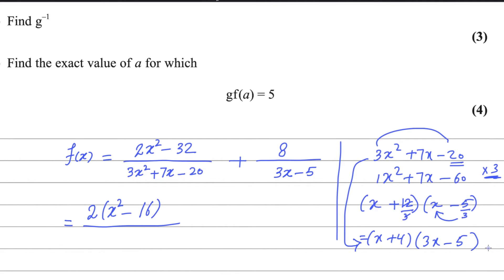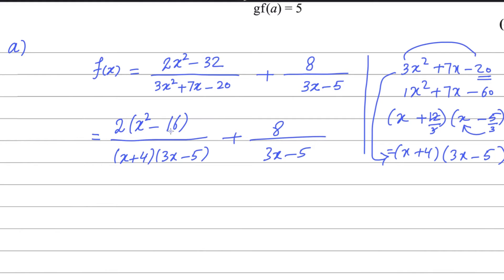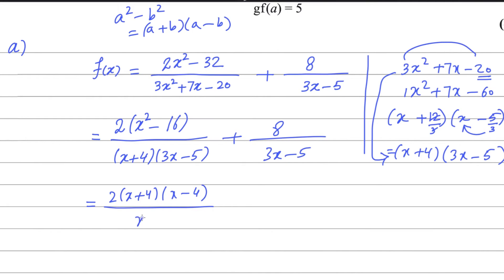So the denominator factorizes to x plus 4 and 3x minus 5. The numerator x squared minus 16 is a difference of two squares — x squared and 4 squared — using the formula a squared minus b squared equals a plus b times a minus b. So the numerator becomes 2 times x plus 4 times x minus 4, giving us 2(x+4)(x−4) over (x+4)(3x−5), plus 8 over 3x minus 5.